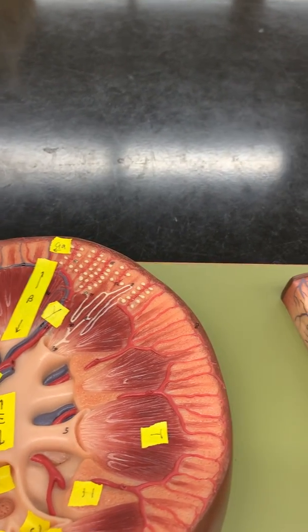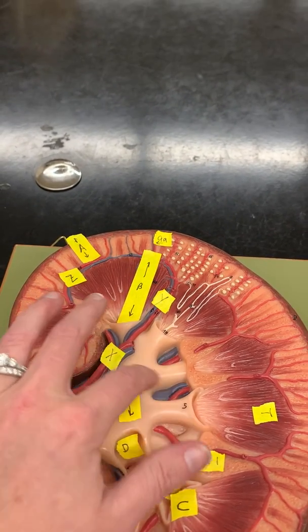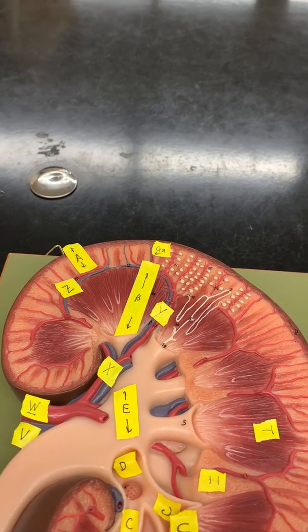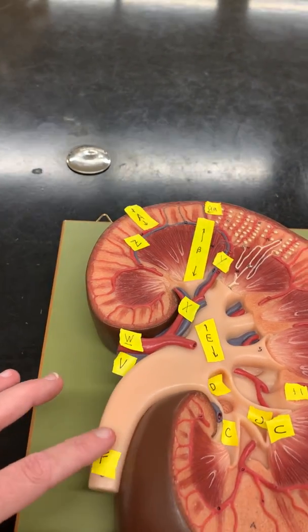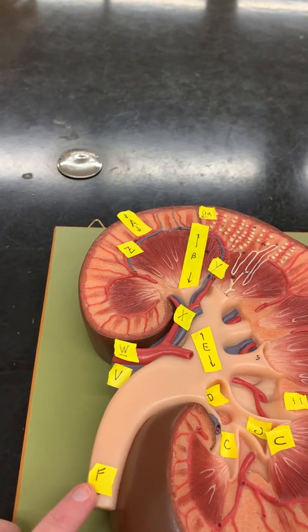The renal pelvis, that's this bottom part of the kidney where everything just comes together. All your calyces come together in the renal pelvis. And then after that is the ureter. So urine leaves here and goes on out the ureter, that's letter F, down to the bladder.